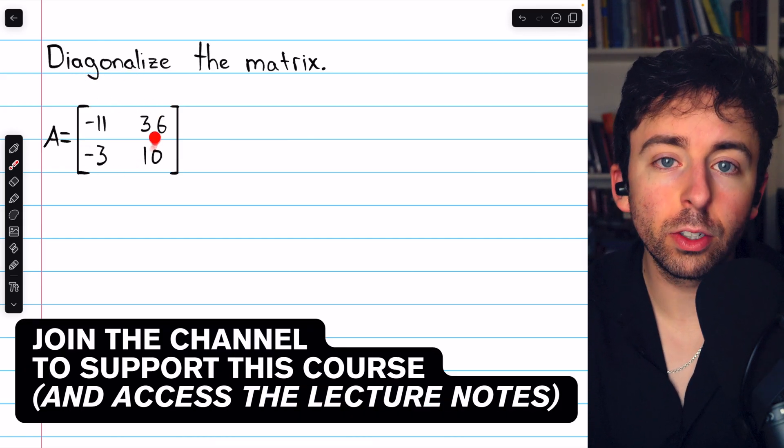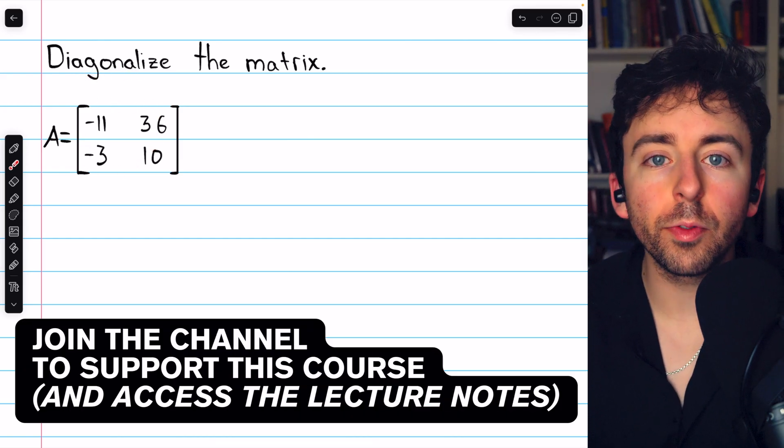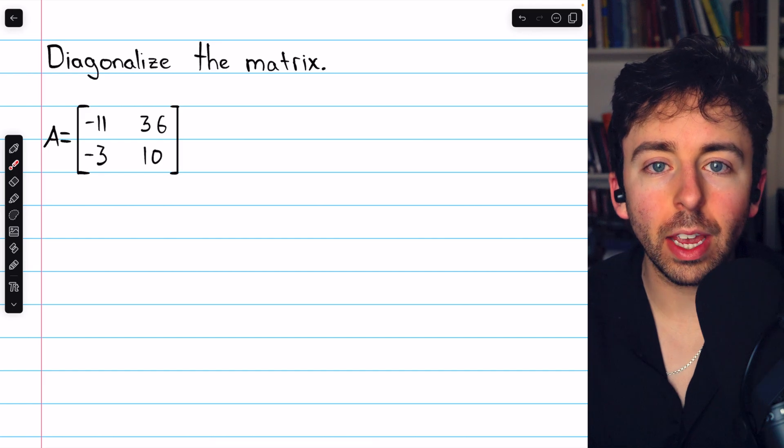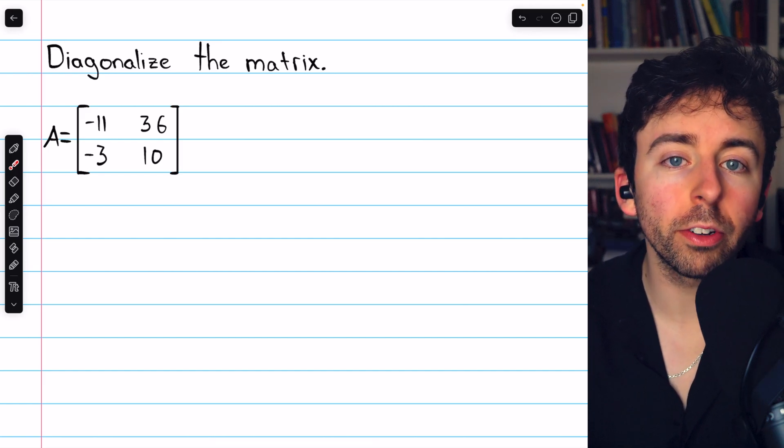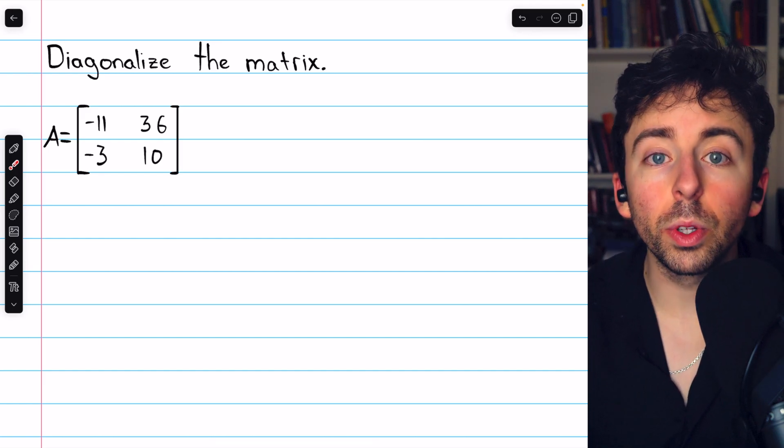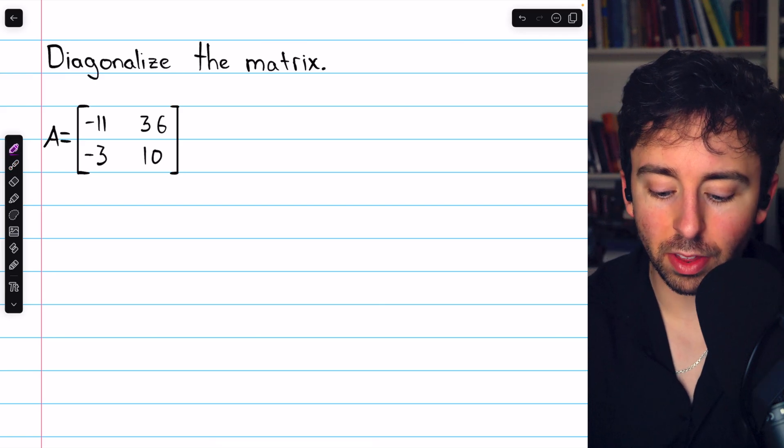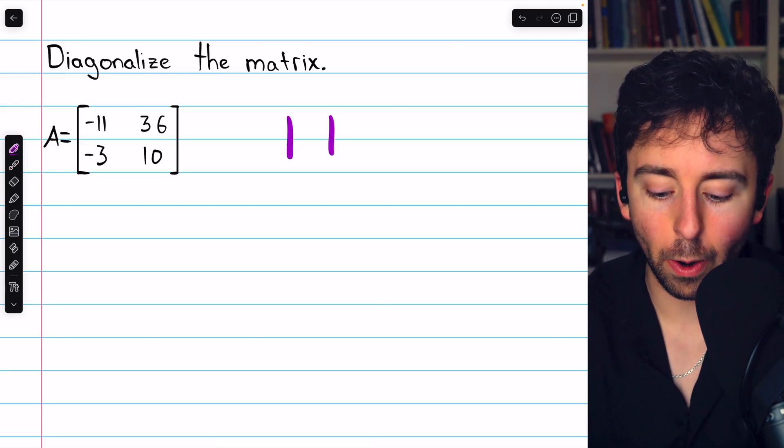In order to diagonalize this 2×2 matrix, we need to find its eigenvalues and then use those to find the corresponding eigenvectors. We'll take those eigenvectors and use them as the columns for our diagonalizing matrix P.